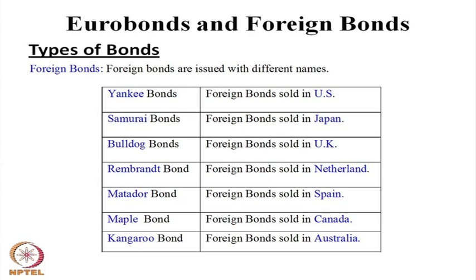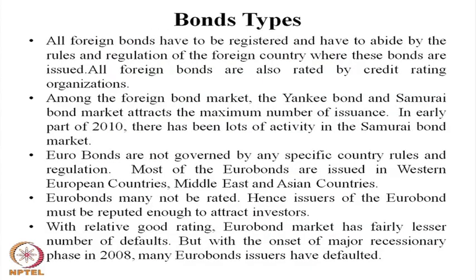Samurai bonds are very low-risk, low-cost bonds available in the international market. Similarly, Yankee bonds are denominated bonds available in the US market. All these bonds need to be issued and registered as per the guidelines of the international market, because bonds must be compulsorily rated and are generally traded in international markets, so they need to be listed in international stock markets.